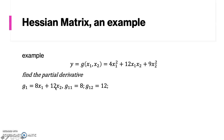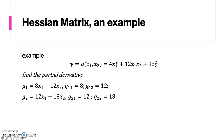The result is 8x1 plus 12x2. Then, the second partial derivative with respect to x1 is equal to 8. So you take the second derivative of this first derivative result with respect to x1, and the second derivative with respect to x2, giving you these two results. The next step is to take the first derivative with respect to x2, which gives 12x1 plus 18x2.